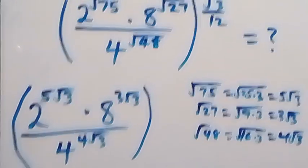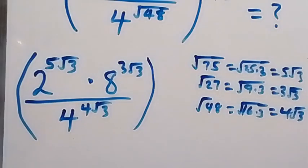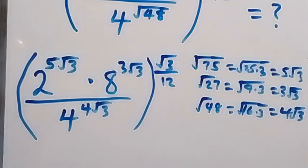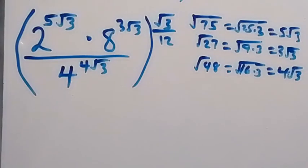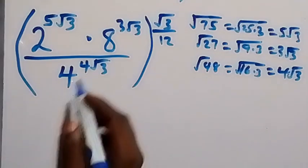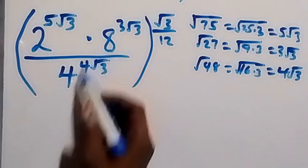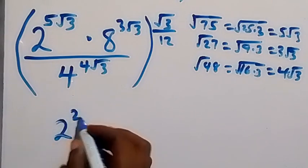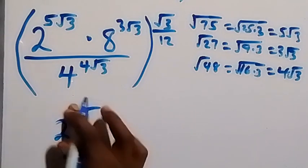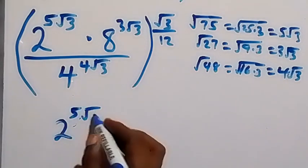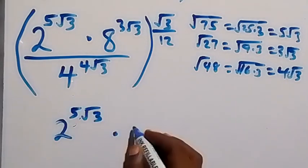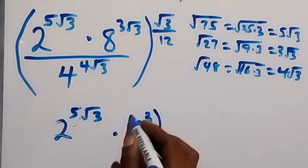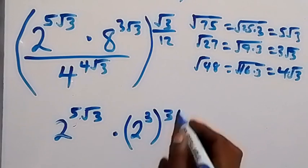Then all of this is raised to power root 3 over 12. In the next step, we express each base in terms of 2. So we have 2 raised to power 5 root 3, then times 2 raised to power 3, then raised to power 3 root 3.